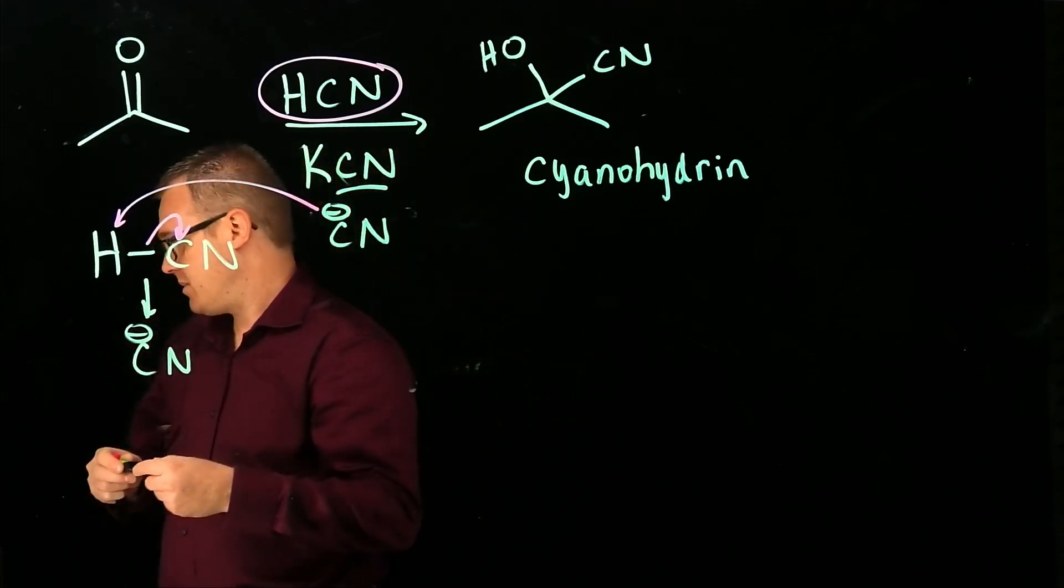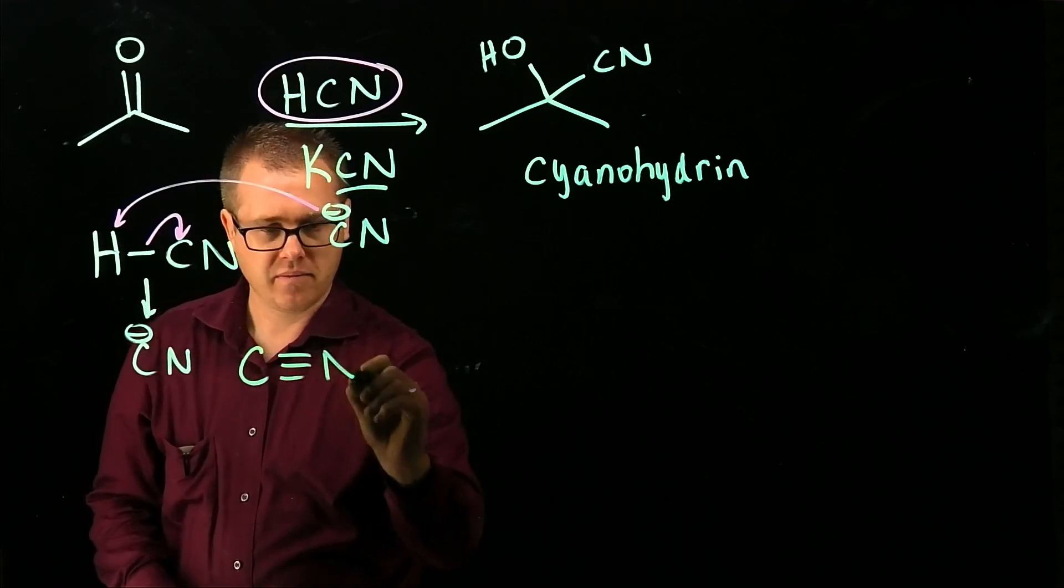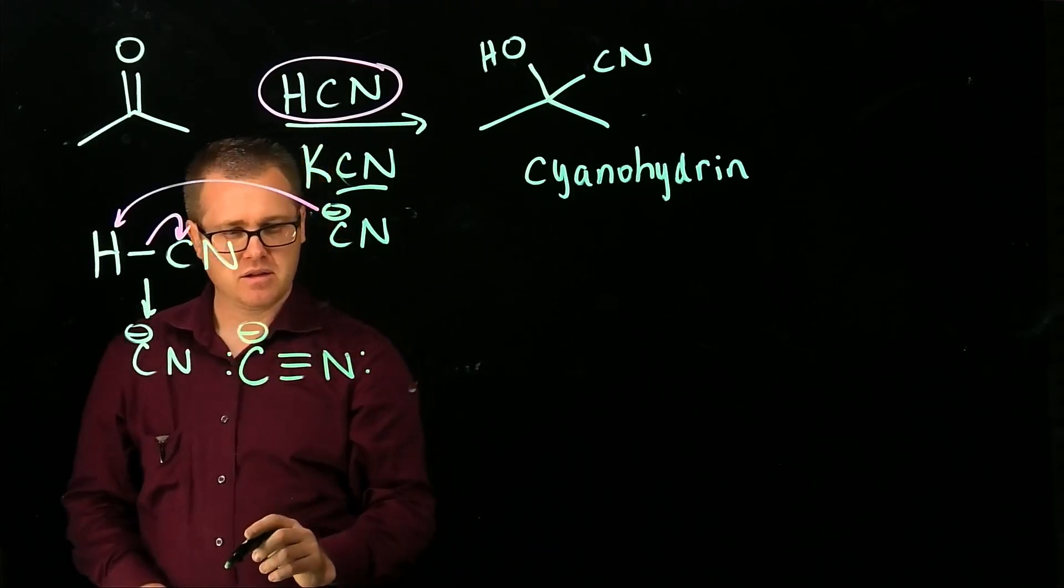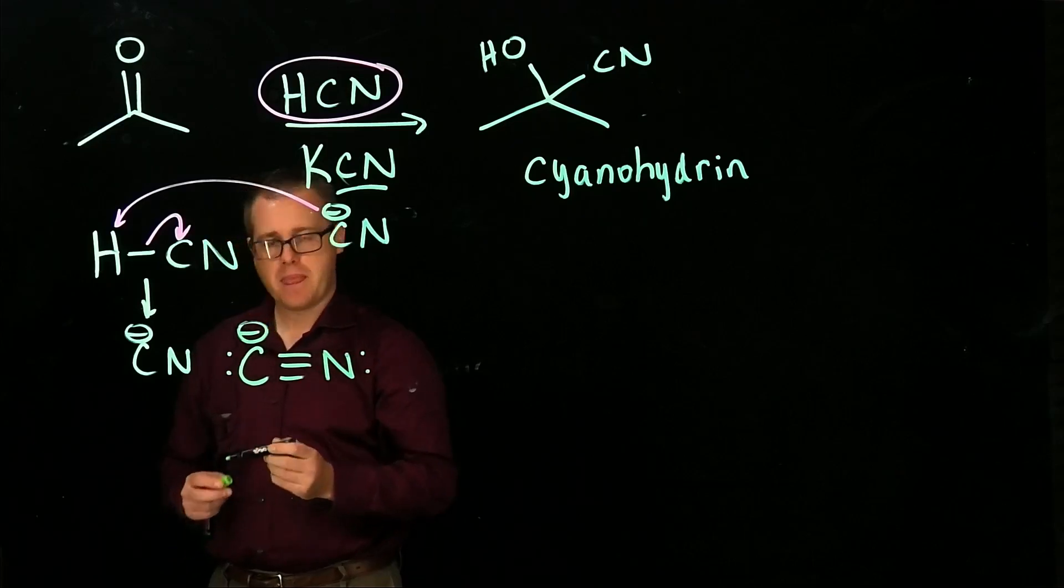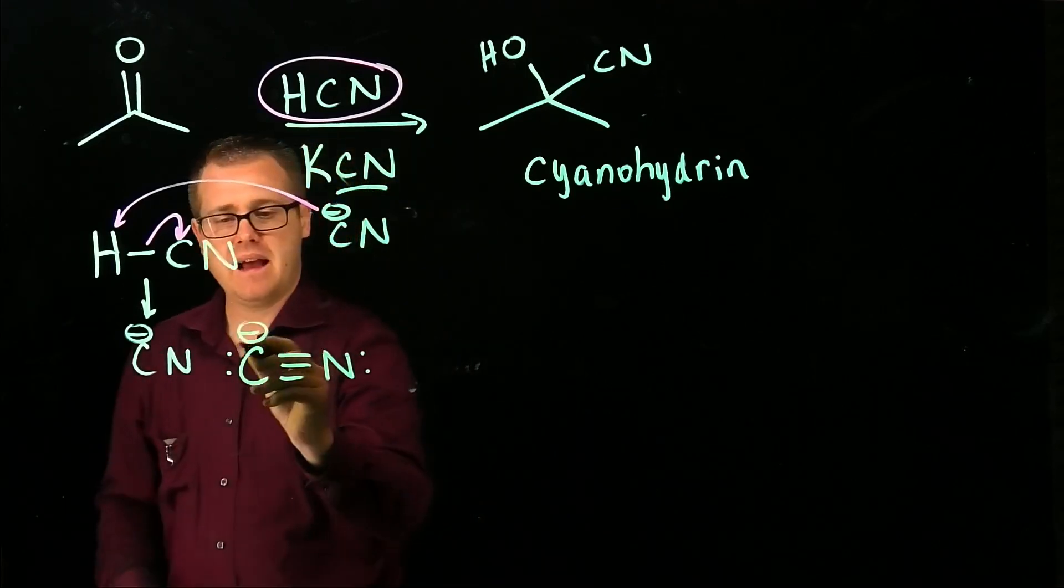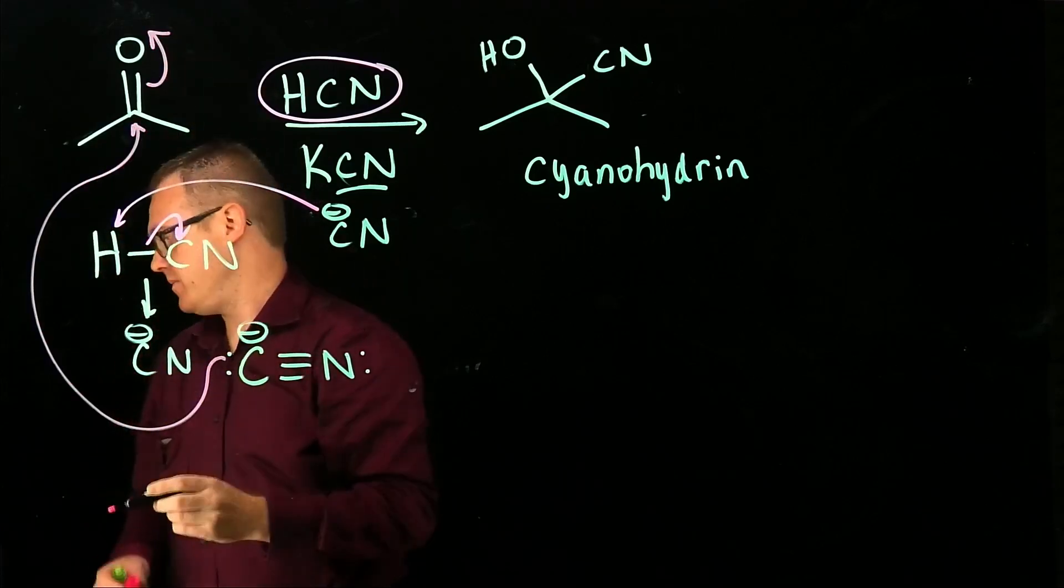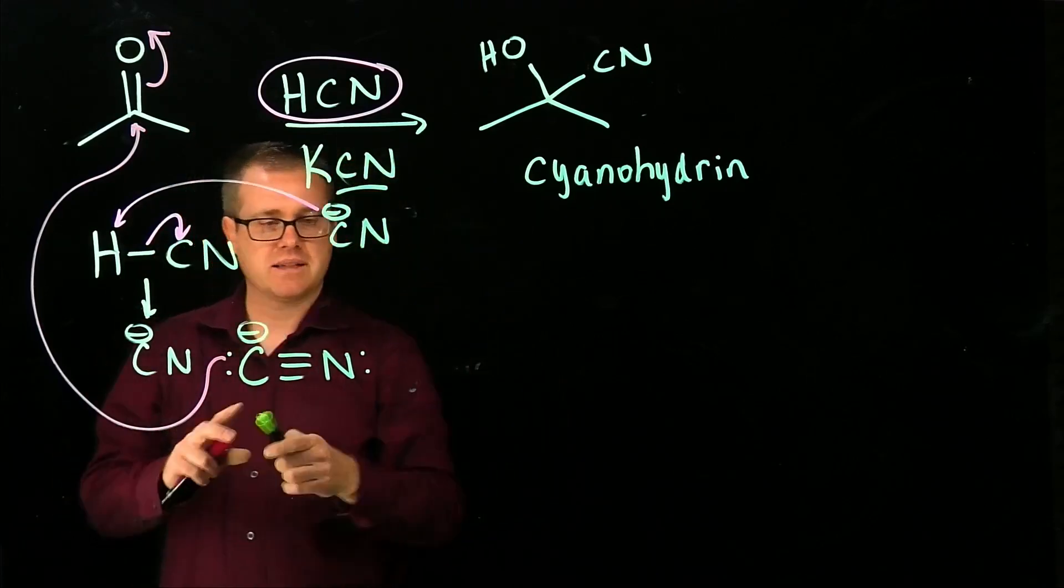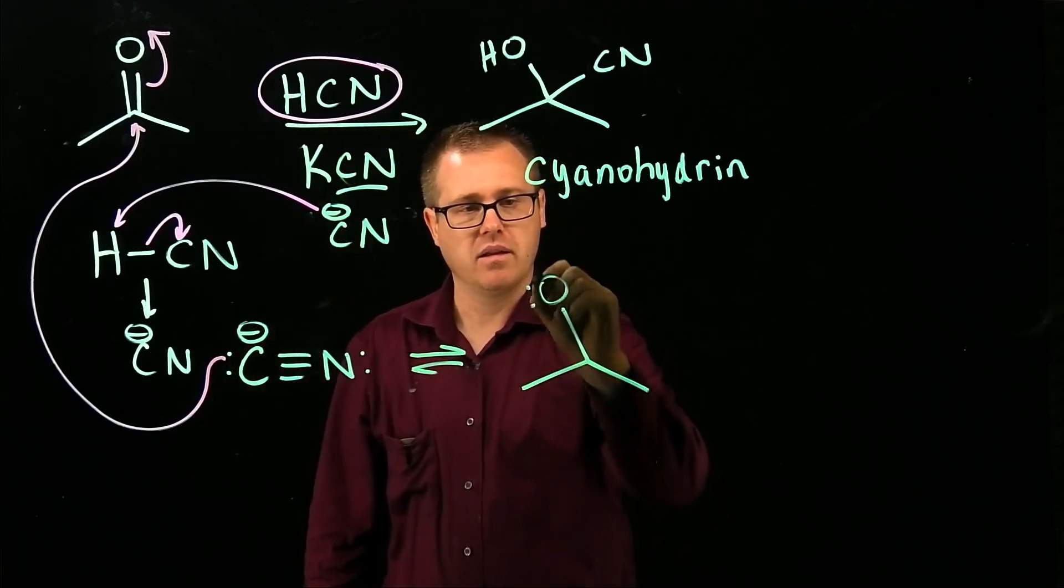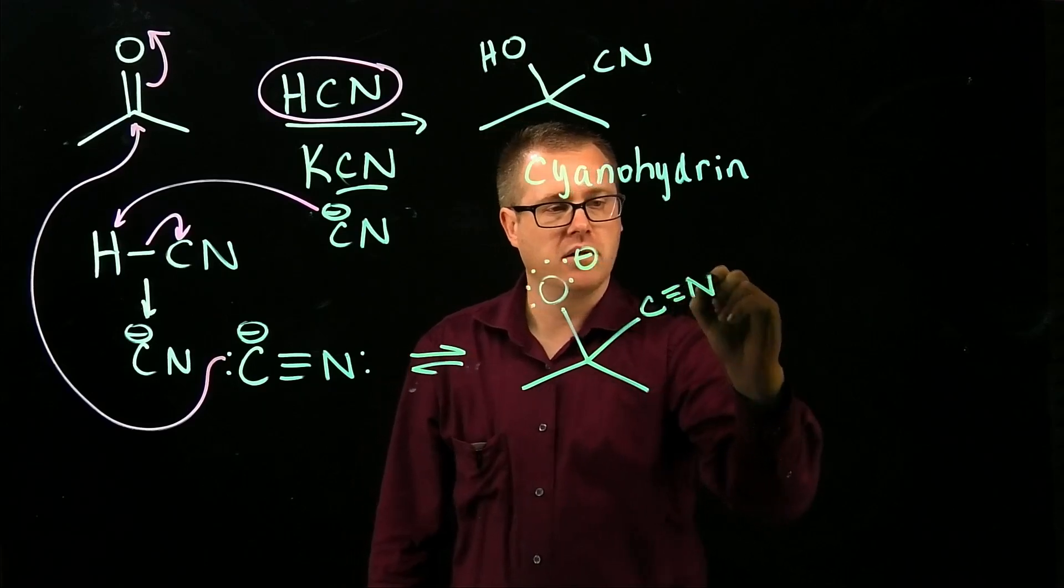Now we can take that attacking species, and if we expand this guy out, it looks like this. There's our cyanide anion, and that is going to come in and attack like so. And that process is reversible, so we are going to have negative, like that.